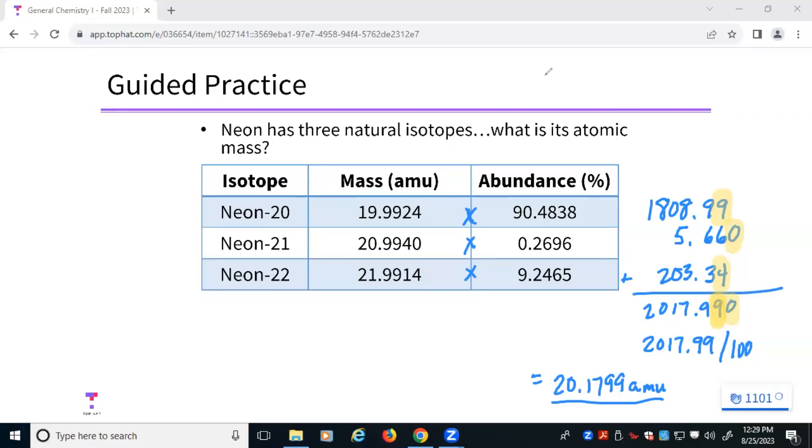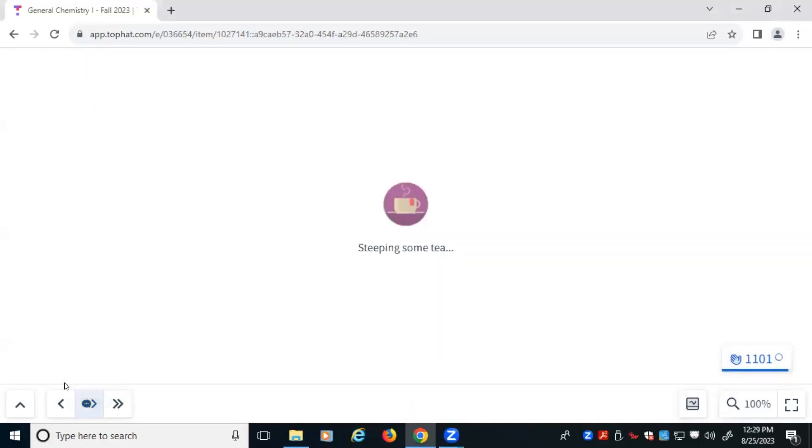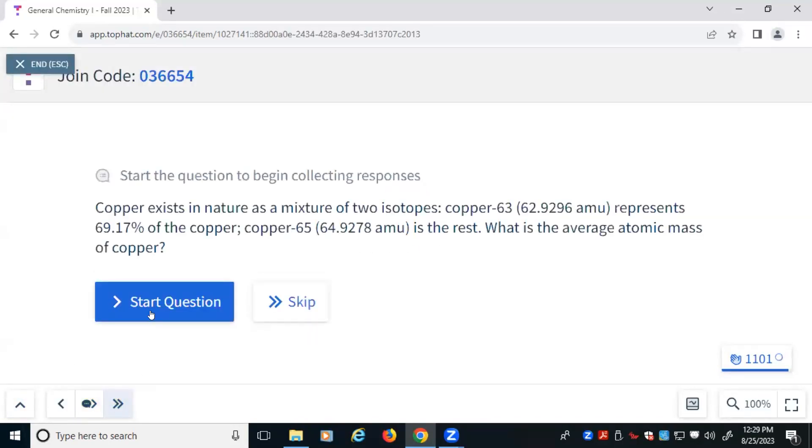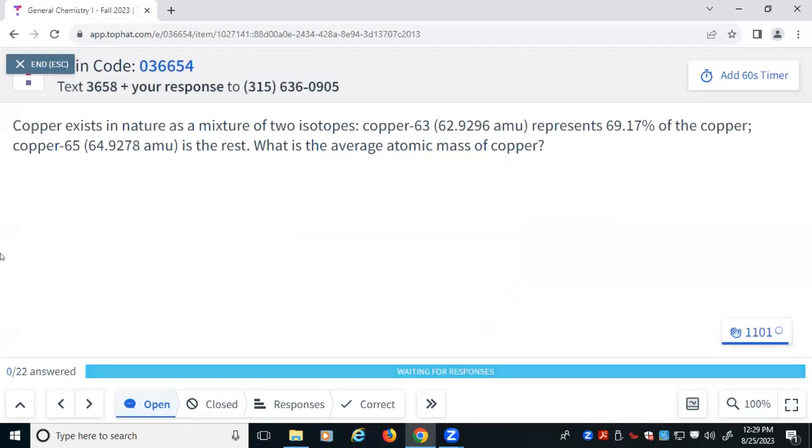All right. Because I'm about to turn it over to you and ask you to answer a question. So we have copper. Copper exists as both copper-63 and copper-65. Copper-63 makes up just over 69% of copper. Copper-65 makes up the rest of copper. We need to figure out what the average atomic mass is. So follow that exact same series of steps, piece by piece, and try to get the average atomic mass. I'll let you go at it on your own here for a couple of minutes, and then we'll walk through how to do it and get the correct answer here at the end.